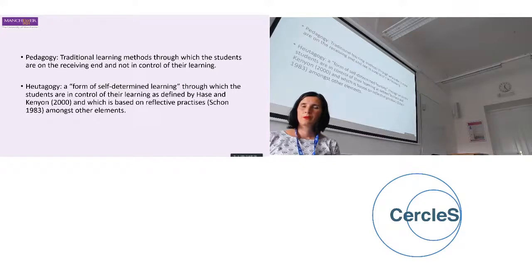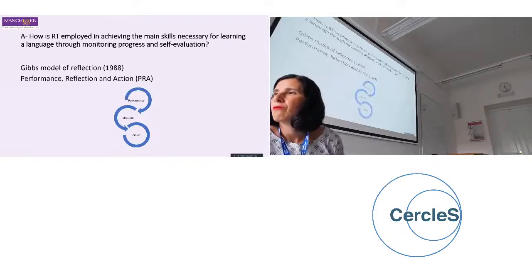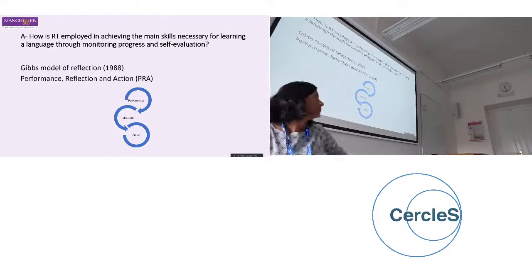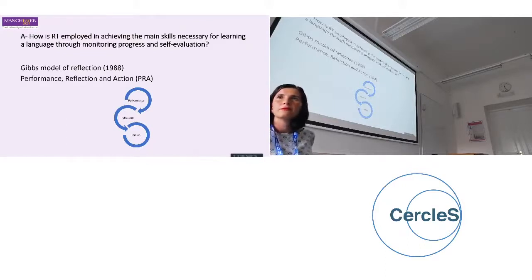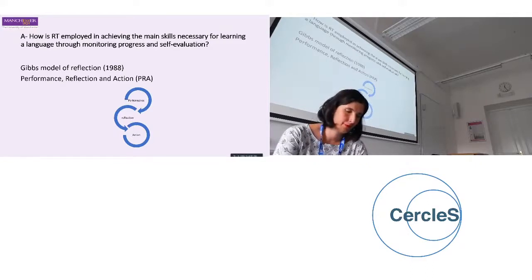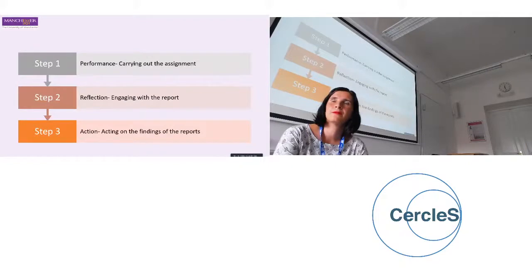As a first step, students need to understand what reflective thinking is. I used the Gibbs model, which is the famous model for reflection, which has three interlinking aspects necessary for achieving the objectives. We have performance, reflection, and action. Applied to language learning: performance is the carrying out of the assignment; reflection is engaging with the reports; and action is the final stage where we act on the findings of the reports. Assignments are an integral part of language learning, and languages are no exception.